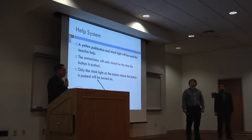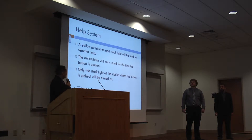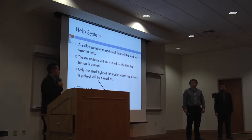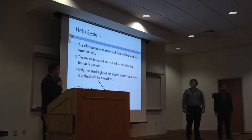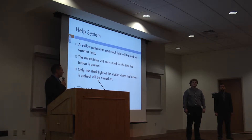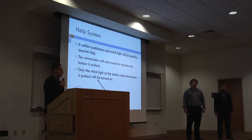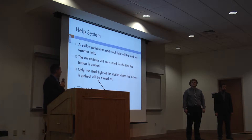With the help system, there will be a yellow push button at every station. Whenever you hit that yellow button at any station, an amber light will come on to allow faculty members to identify where the help is needed. An example would be if a student needs help running a machine or finding tools or equipment. A faculty member will know exactly where the help is needed. The enunciator will only sound for the amount of time the button is pressed.